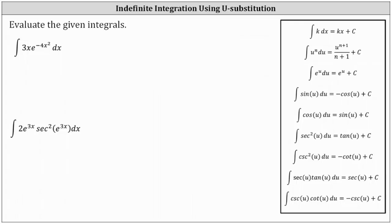Looking at the first integral, notice how part of the integrand function is degree one and part is degree two. We know when differentiating a polynomial, the degree drops by one. With that in mind, we'll let u equal the exponent of negative 4x squared.